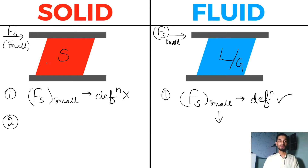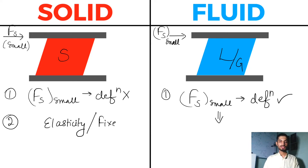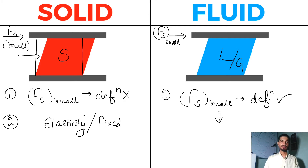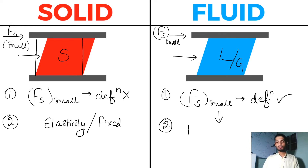In solid, if you apply force, the deformation depends on the nature of the body. If the solid is elastic, I will see the effect of elasticity. If it is a plastic body, I will see a fixed deformation. So if my body is elastic it will regain its shape, and if it is plastic I will see fixed deformation. On the contrary, if I apply the same shear force to a fluid, I'll see permanent deformation — not elastic — permanent deformation.